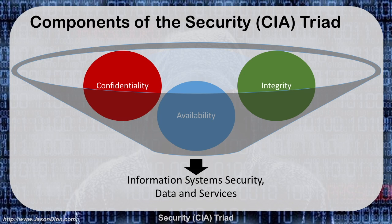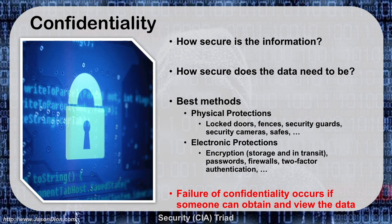So what are the components of the CIA triad? It's confidentiality, integrity, and availability. These three tenets are the tenets of information system security for data and services. If we have these three things, we're going to have a secure system. The question comes in: how much of each of these three things do I have? Is it going to be a nice, pretty, equal amount or not? We'll talk about each one individually.